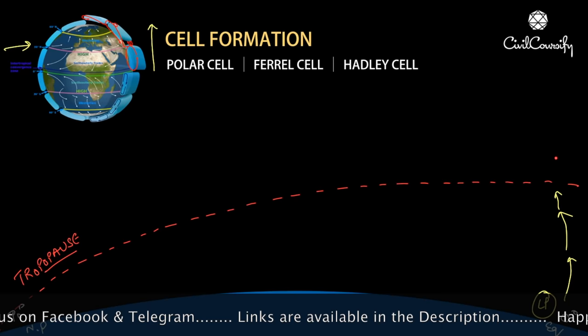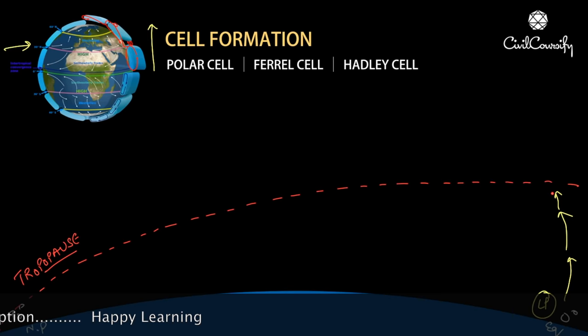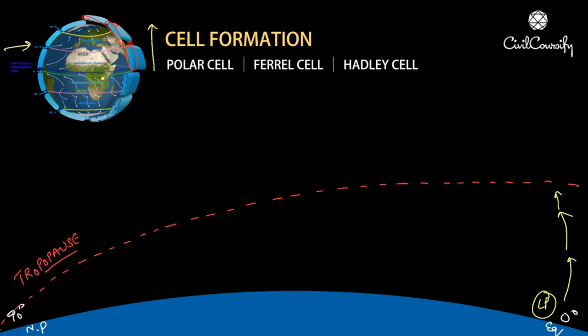Air remains in the troposphere and cannot go to the stratosphere, so it has to stop at the tropopause and diverge there. As we discussed in the ITCZ video, the north-easterly trade winds and south-easterly trade winds converge in the ITCZ region and rise up. Near the equator, basically in the ITCZ region, both these trade winds converge, rise up to the tropopause, and then diverge — half moving toward the north pole and half toward the south pole, forming separate cells in each hemisphere.